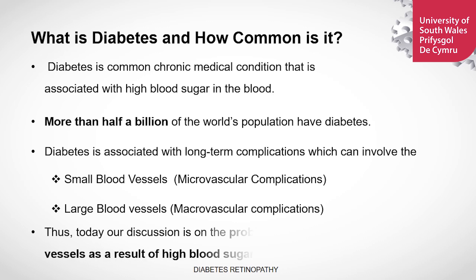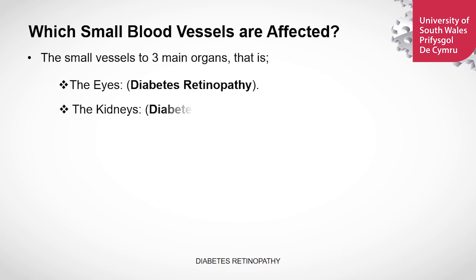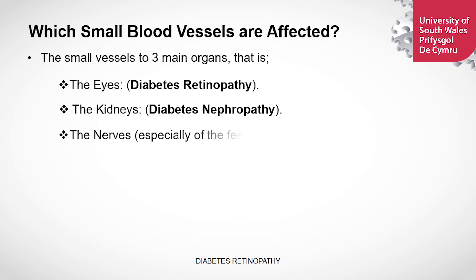Today we are discussing the problems that affect the small blood vessels as a result of high blood sugar or diabetes. The small blood vessels supply organs which include the eyes, known as diabetic retinopathy; the kidney, known as diabetic nephropathy; or blood vessels to the feet, which is referred to as diabetic peripheral neuropathy. In this video, we shall focus on diabetic retinopathy.